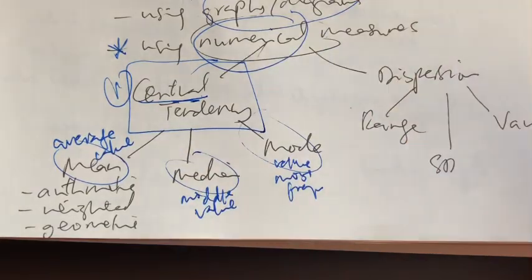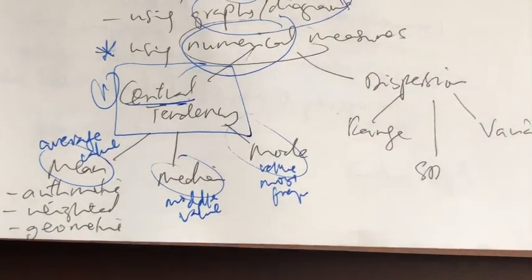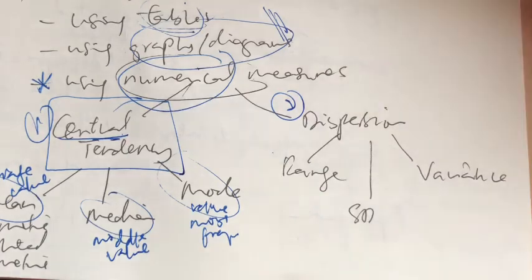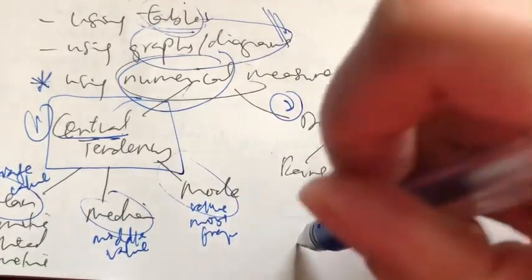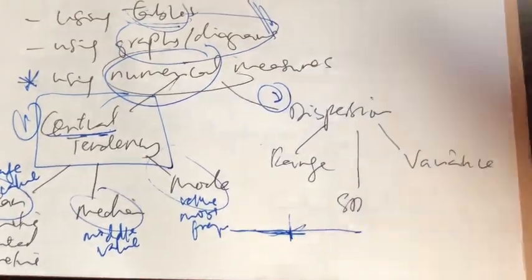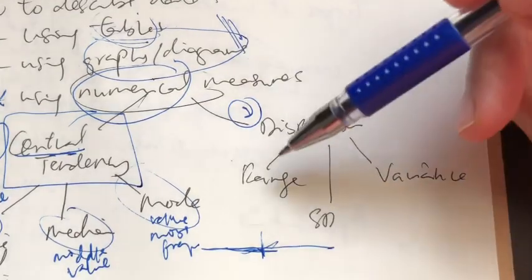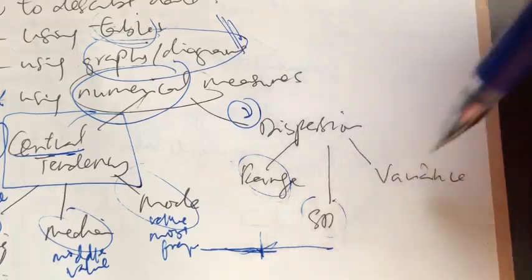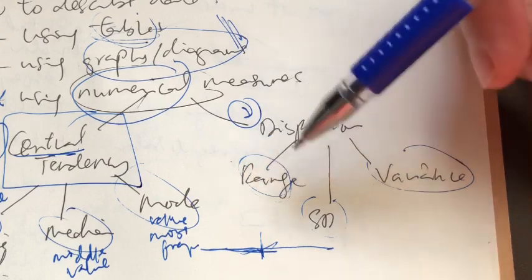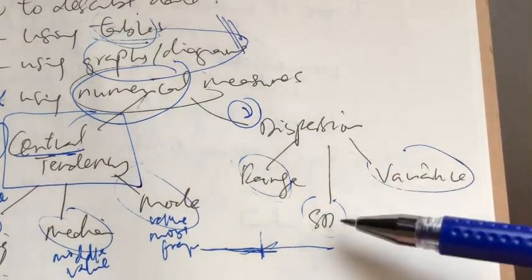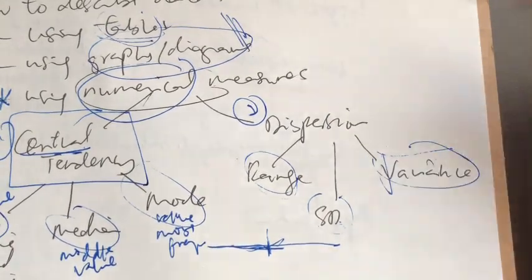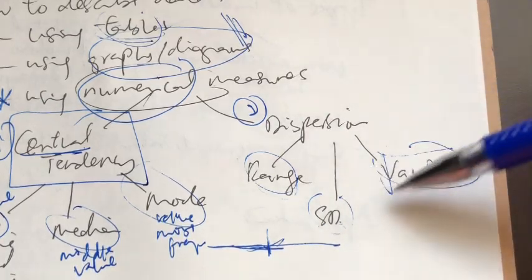We learned three different types of means: the arithmetic mean, the weighted mean, and the geometric mean. Please know each of them and how they differ, and which is used in different circumstances. Mean is basically the average value of the data set. Median is the middle value. Mode is the value that occurs most frequently. These three measures of central tendency all tell us what the center of our data set is. The second way to describe data is dispersion — how far or how near all the data are from the center. The three measures of dispersion are range, standard deviation, and variance. Range is the largest value minus the smallest. Standard deviation is the positive square root of variance.